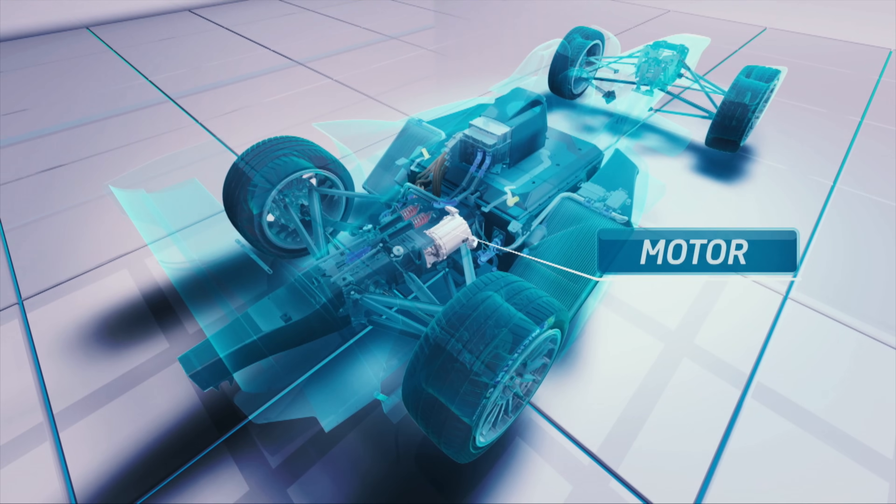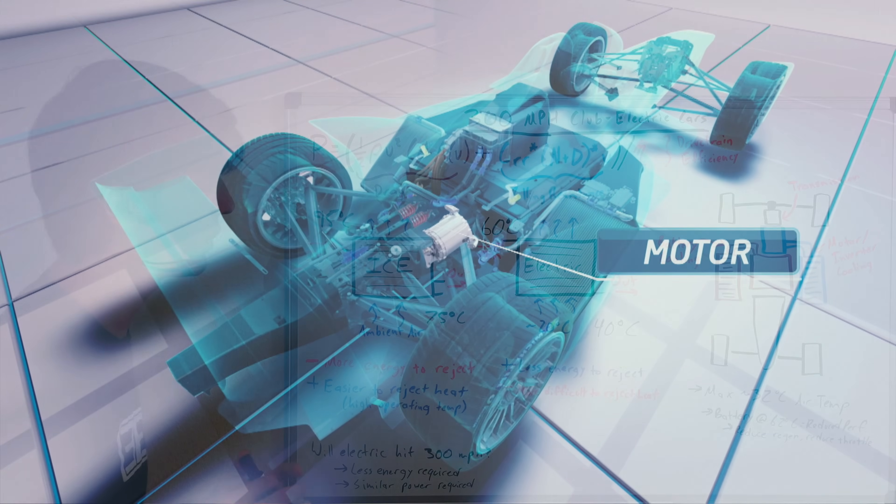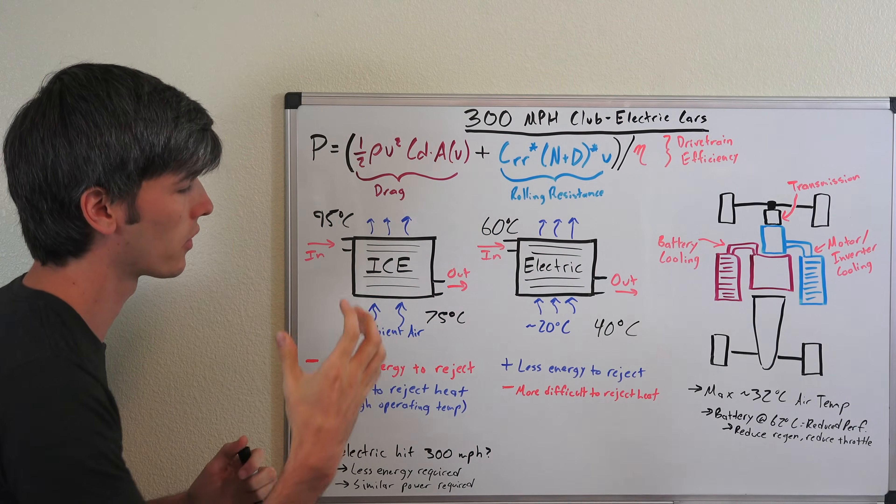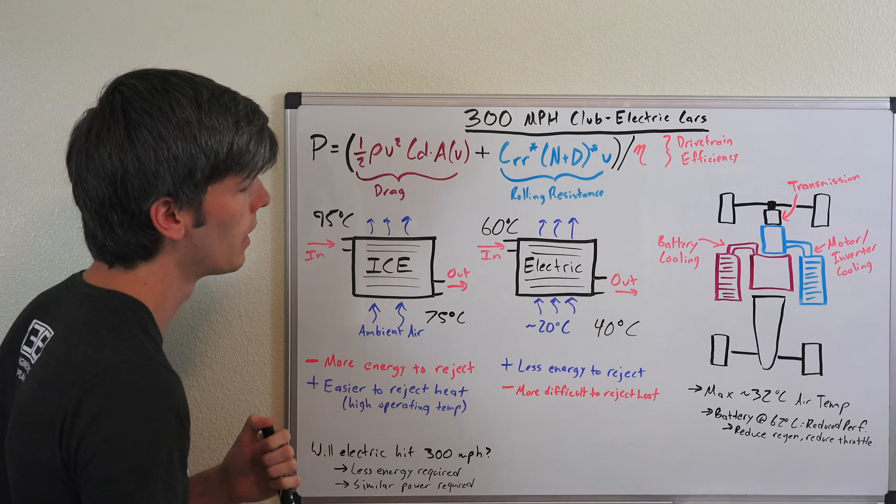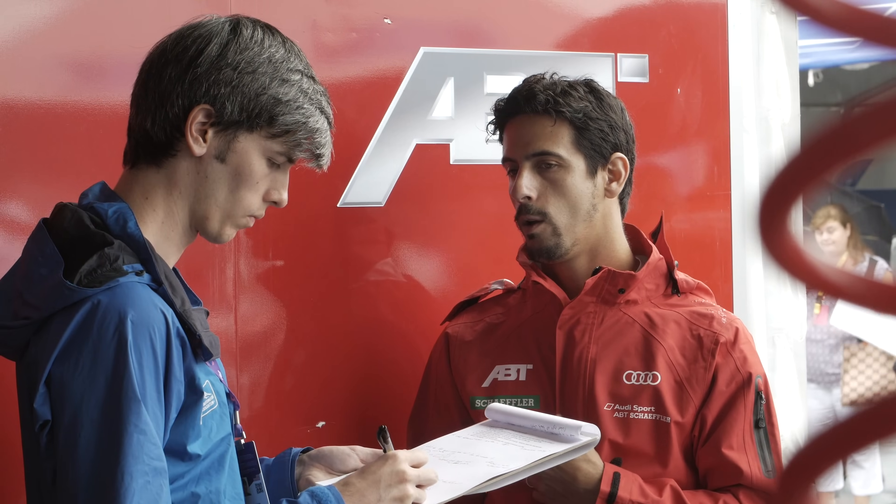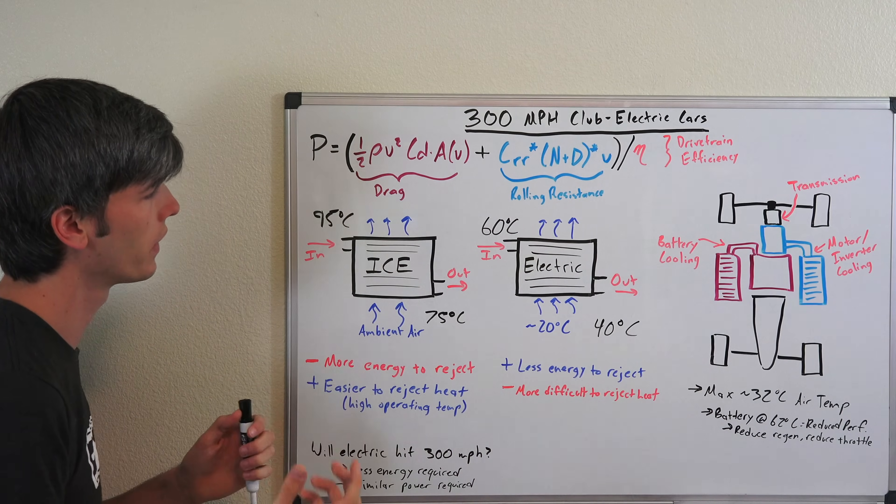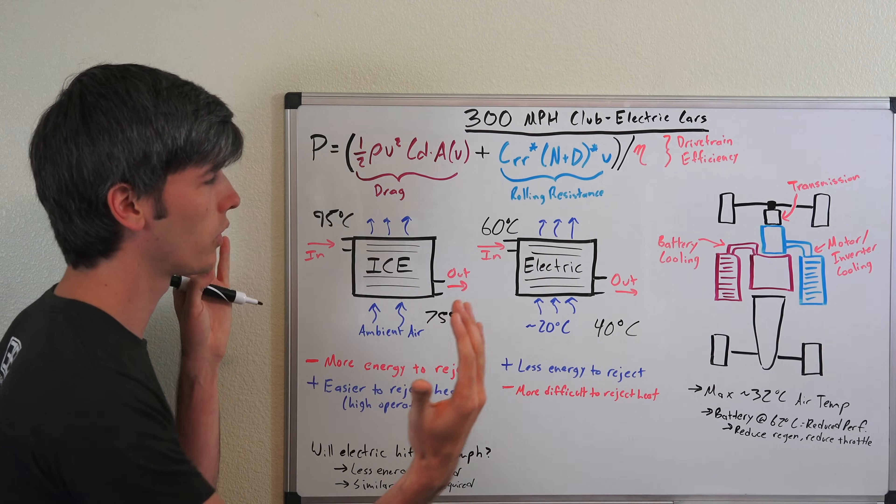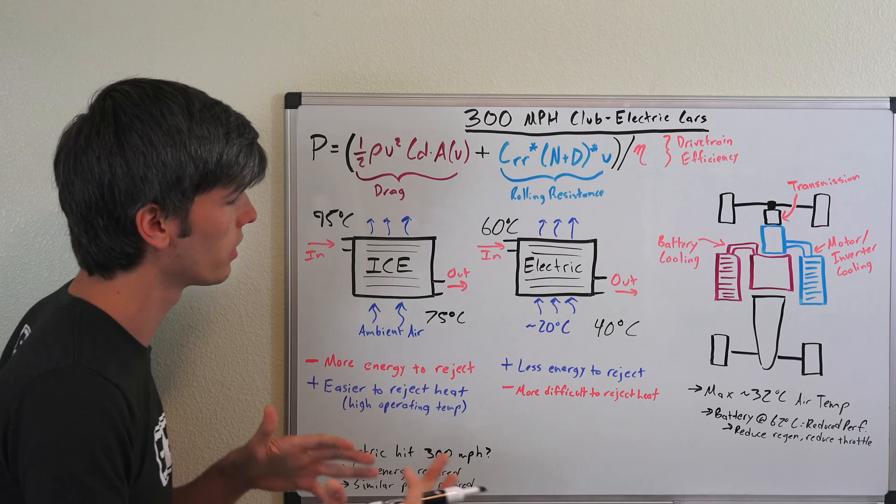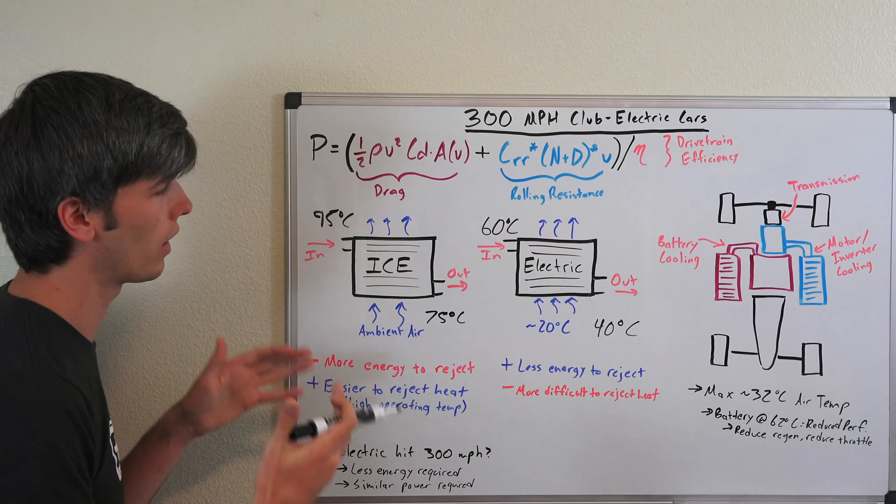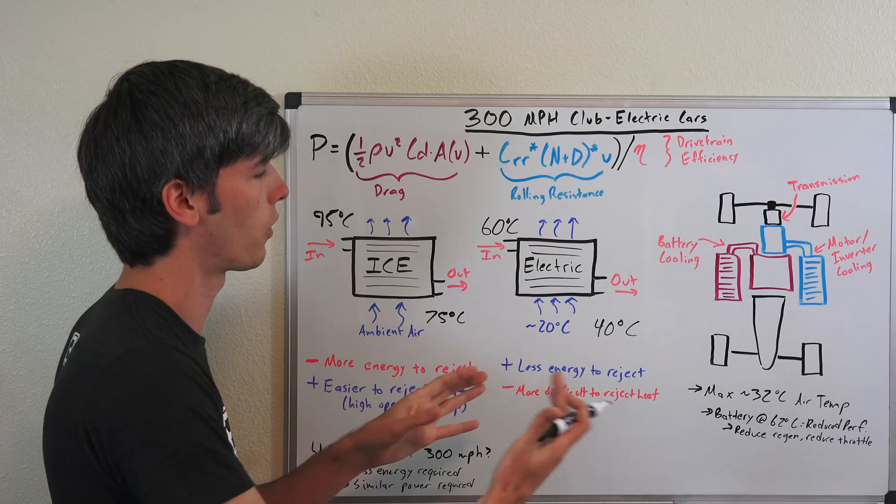On the flip side, the electric vehicle has less energy to reject because it's far more efficient, but it's more difficult to reject that heat because the temperature delta between ambient air and the coolant going into your radiator is going to be lower. And when I was developing a cooling system for an electric vehicle, what I noticed is that I was using basically the same size radiators as our internal combustion equivalent vehicles were using, even though we were using an electric vehicle that was far more efficient.